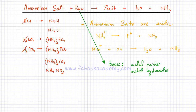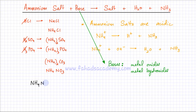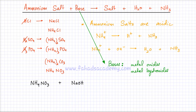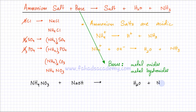I'm now going to write my first reaction. I'm picking ammonium nitrate, NH4NO3, as my ammonium salt. It's reacting with sodium hydroxide, which is an alkali — a soluble base. It's going to produce a salt, a water molecule, and ammonia gas. So we write down water and ammonia gas as products.